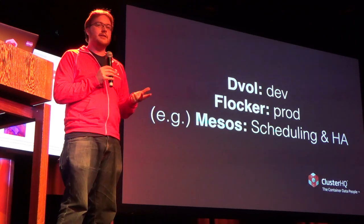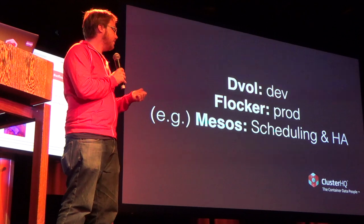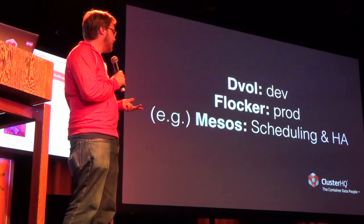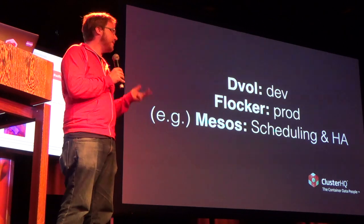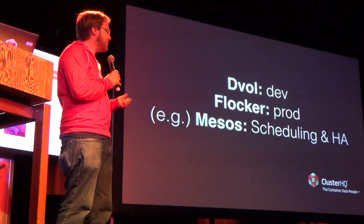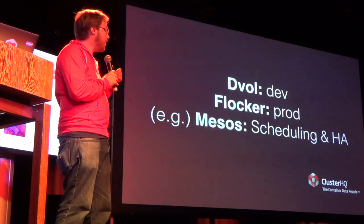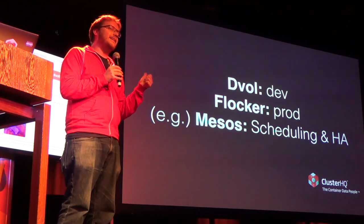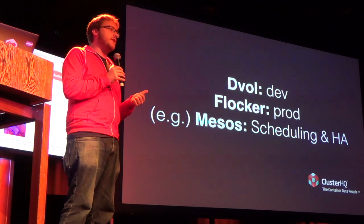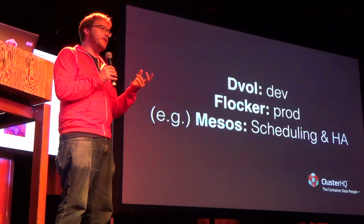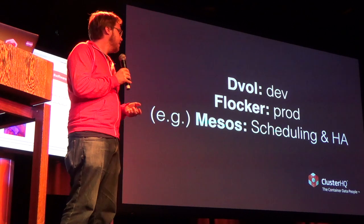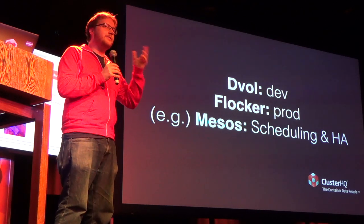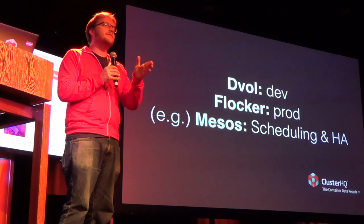I'm going to talk about three things today: Dvol, Flocker, and Mesos. Obviously we didn't make Mesos, but we made the other two. What Dvol is is a way of treating your development databases like a version control system — it's basically like Git for data. Imagine you've got a containerized application running on your laptop and you want to be able to type 'dvol commit' to capture the state of that development database and save it for later.